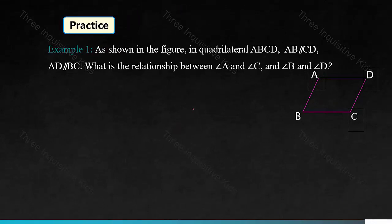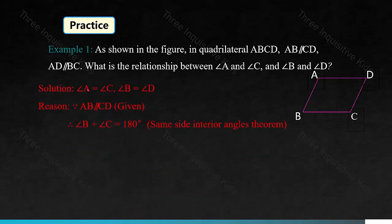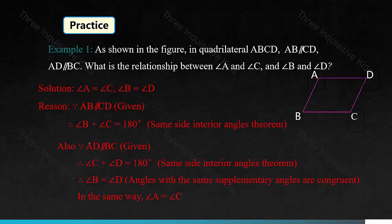As shown in the figure, in quadrilateral ABCD, AB is parallel to CD and AD is parallel to BC. What is the relationship between angle A and angle C, and angle B and angle D? Answer: angle A equals angle C, and angle B equals angle D. Because AB is parallel to CD, therefore angle B plus angle C equals 180 degrees using the same side interior angles theorem. Therefore angle B equals angle D, because angles with the same supplementary angles are congruent. In the same way, angle A equals angle C.